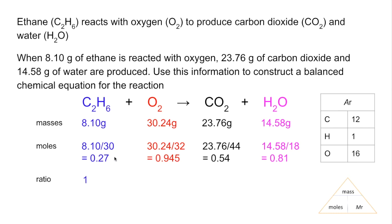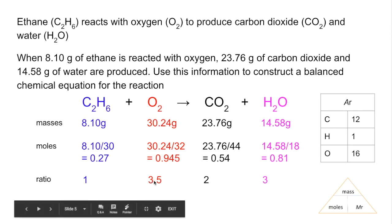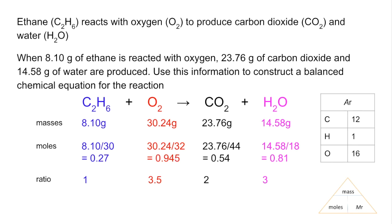So that by itself is 1, 3.5, 2 and 3. So what are we going to do now? We've got this fraction here, 3.5. We can't round it up to 4. That might be what some people think to do. You can't do that. You've got to do the same to everything and so therefore we multiply it out. So the obvious thing to do is multiply everything by 2. So that's going to give us a 2 to 7 to 4 to 6 ratio. And so the balanced chemical equation is written like that.